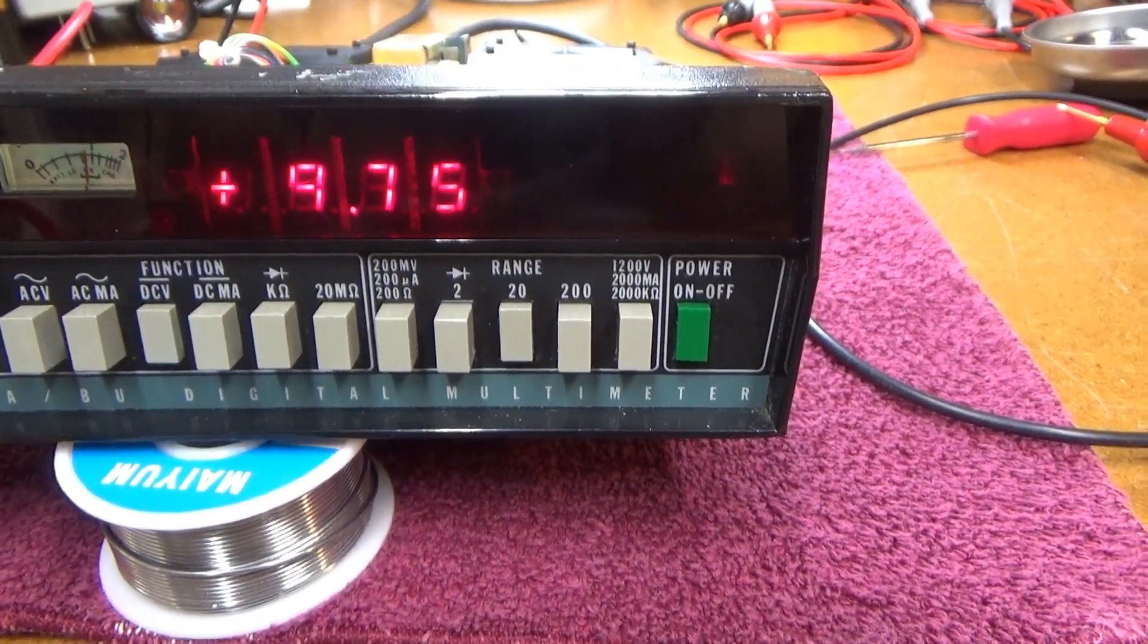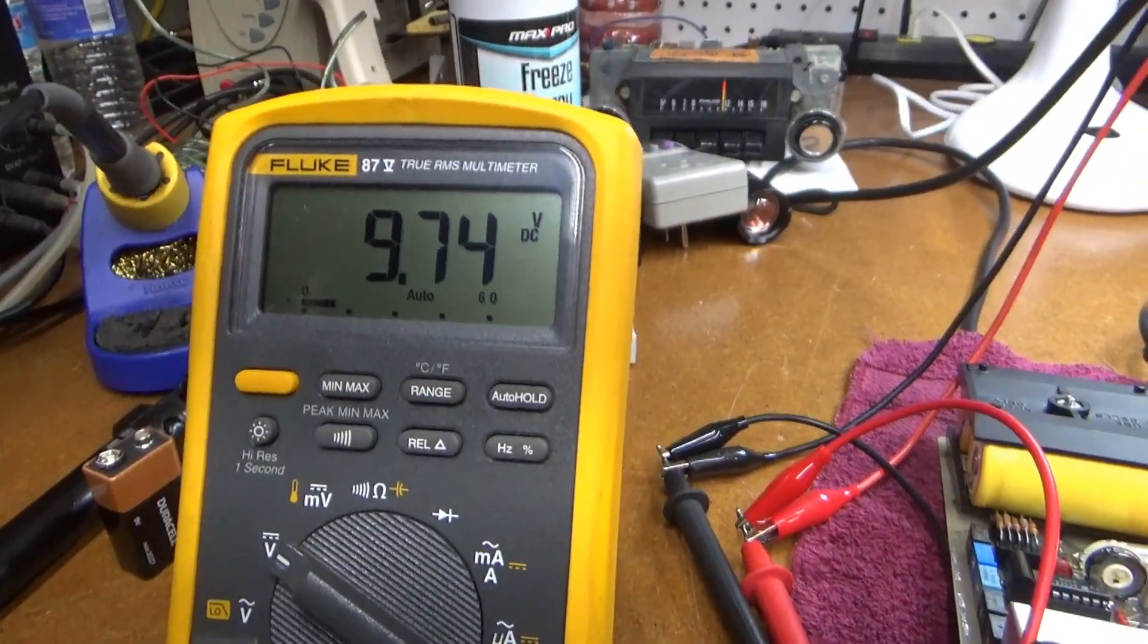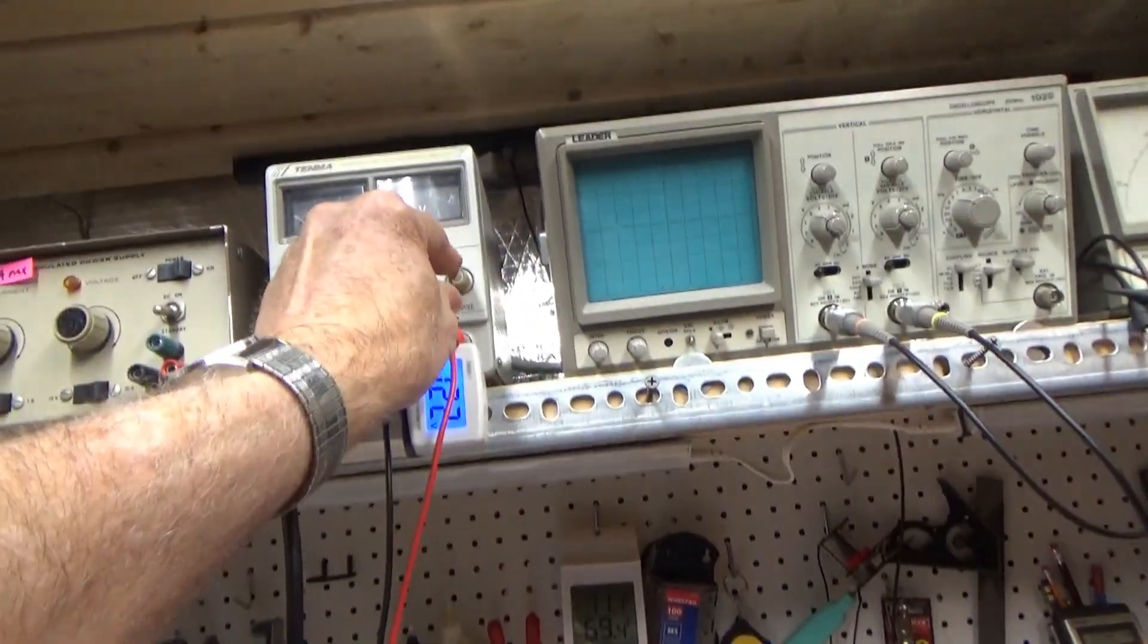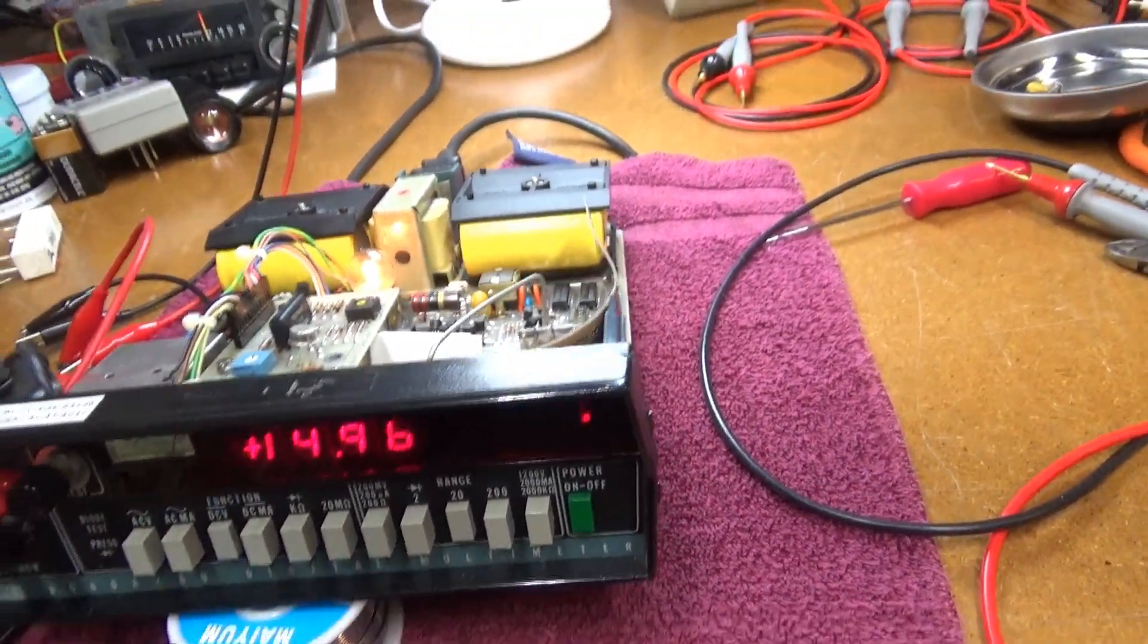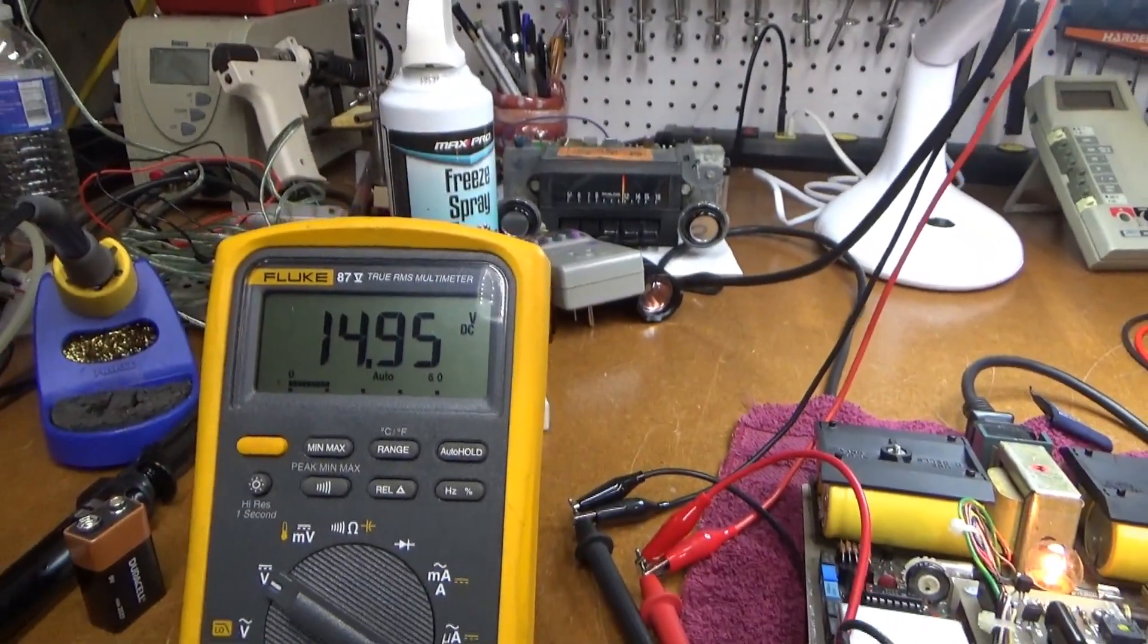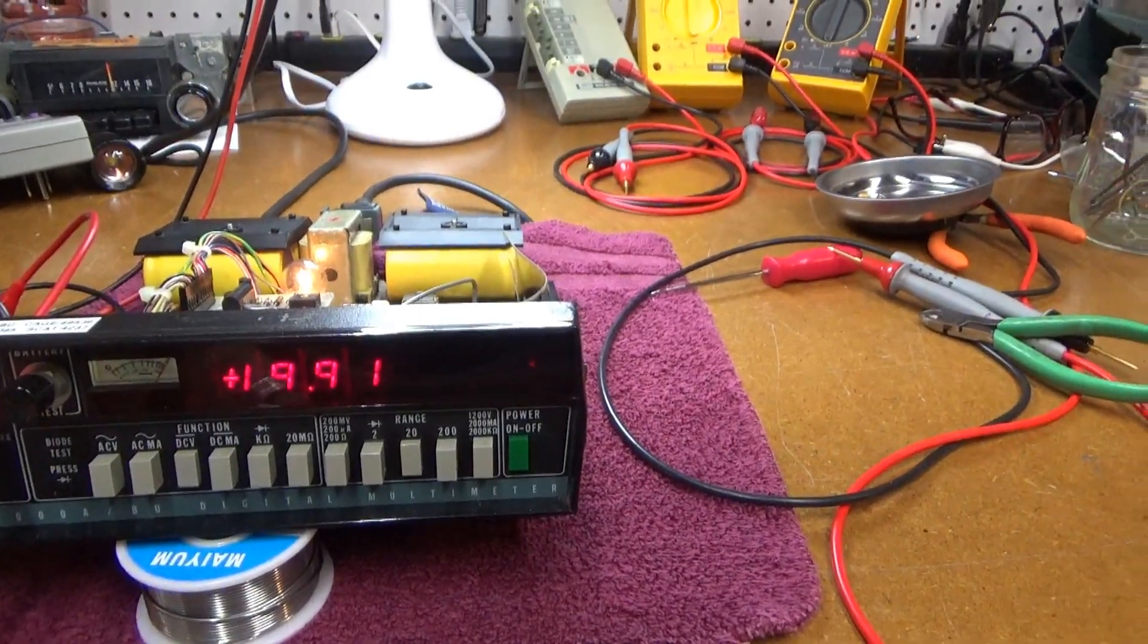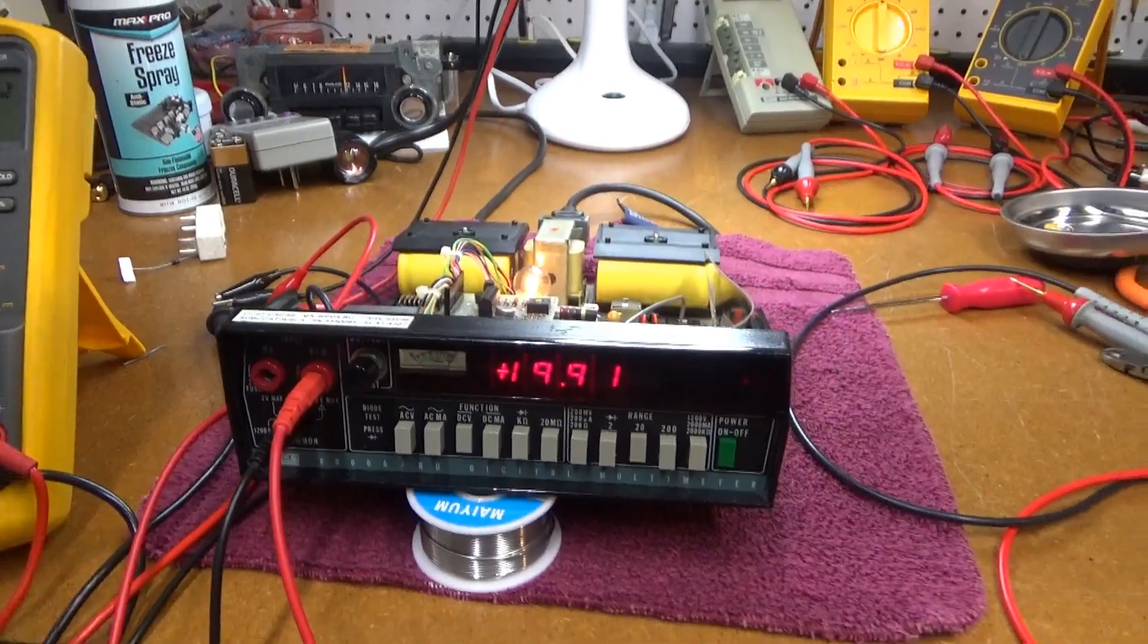It's measuring 9.75, and the Fluke is 9.74. So let's try cranking up the voltage here a little bit on that. Let's go up to about 15. 14.96, 14.95. A little bit more. There should be about 20. 19.91, 19.90. Wow, pretty good.